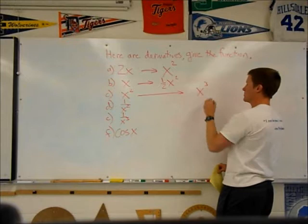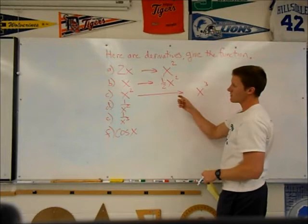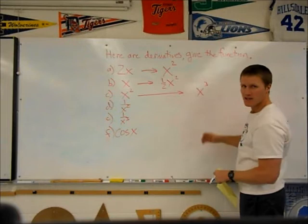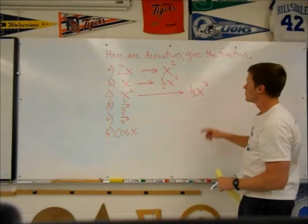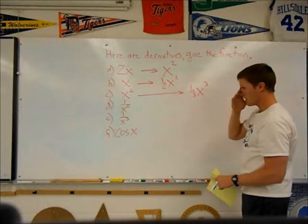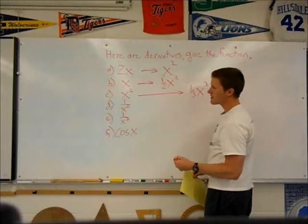In a similar way, the derivative of a cubic would give you a quadratic. But this 3 is coming down. I need something to cancel that 3. It would be a 1 third. Derivative of this is x squared. Anti-derivative of x squared is 1 third x cubed. Let's continue.